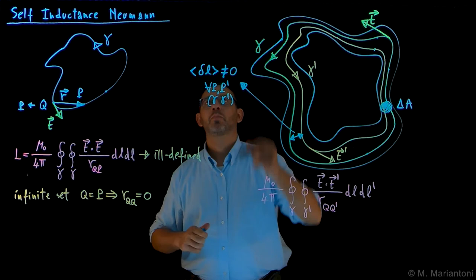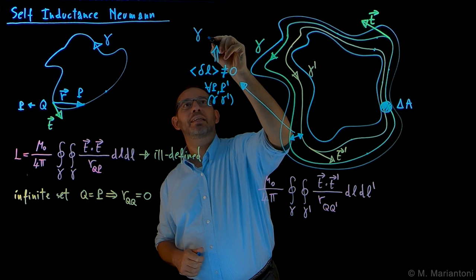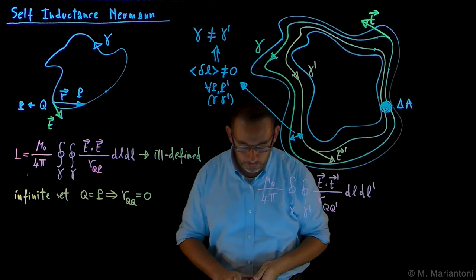In other words, this gamma and gamma prime, because of this condition here, gamma is basically different than gamma prime. So that's what this tells us for each point, for each pair of points.